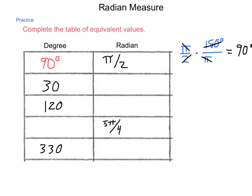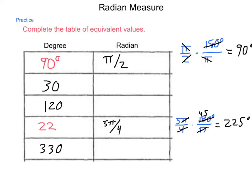Let's try 5π/4. We have 5π over 4 times 180 degrees over π. When we simplify, π divided by π is 1, and 180 divided by 4 is 45. So we have 5 times 45, which is 225 degrees. So 5π/4 is simply 225 degrees.